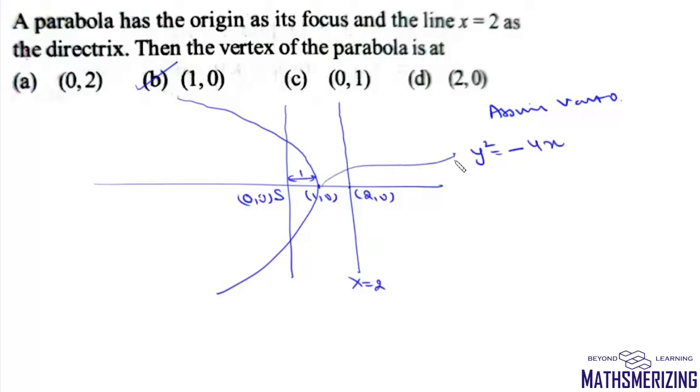Now we will shift the vertex to (1,0). So I will write this equation as y² = -4(x - 1). That is the equation of this given parabola.